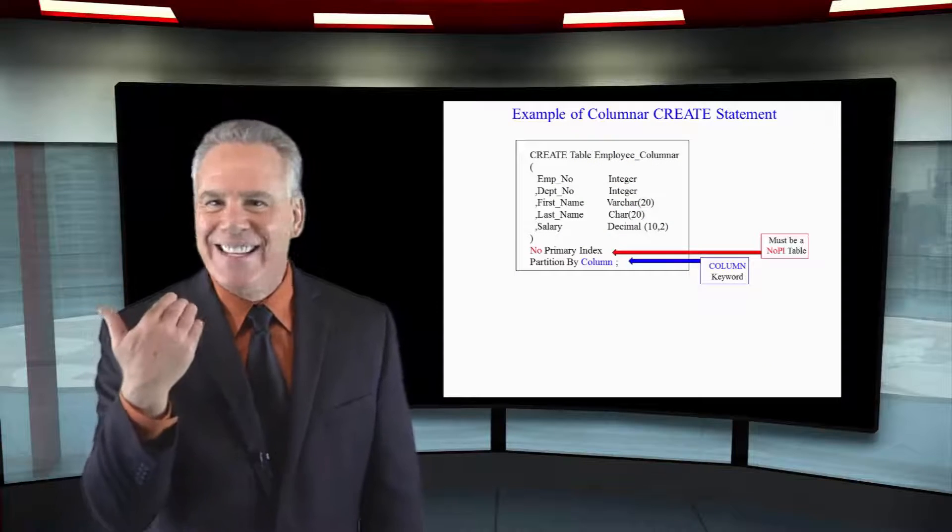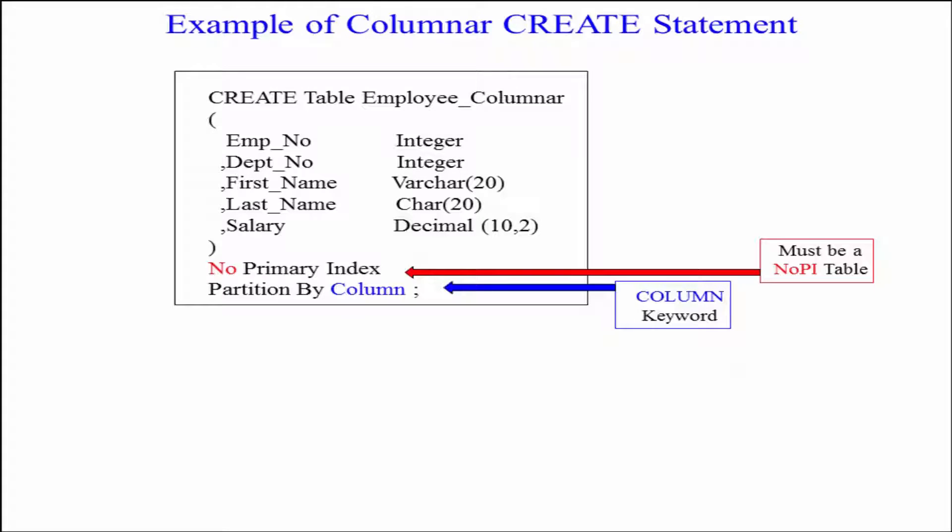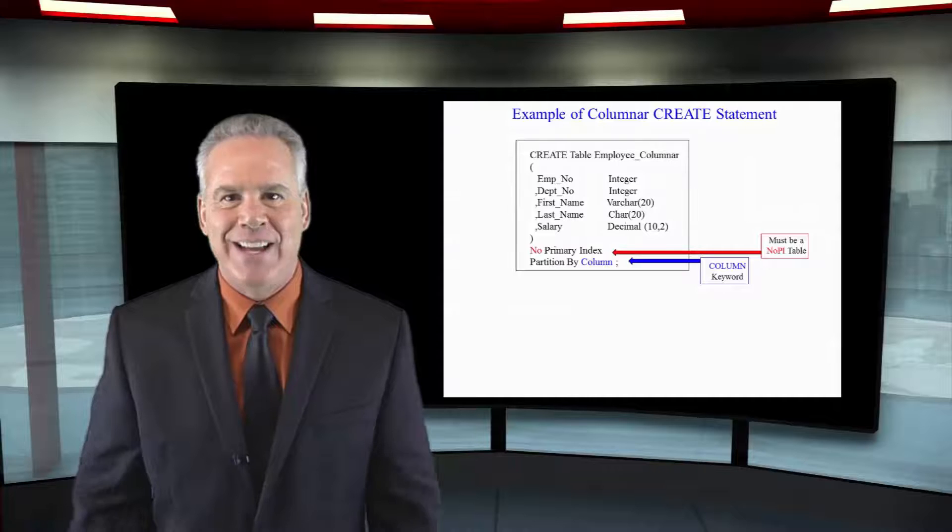Hey, let's get down to it. This is actually how you would create a columnar table. Create table. You've got your table name. You've got your columns and your data type. No primary index partitioned by column. Done.